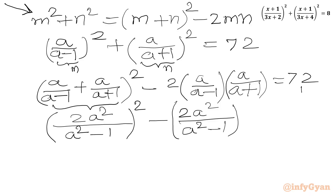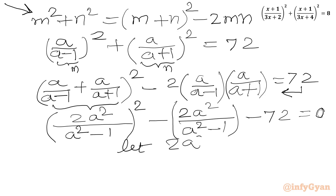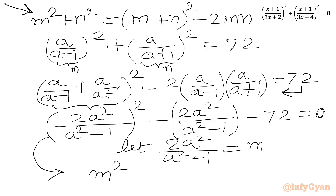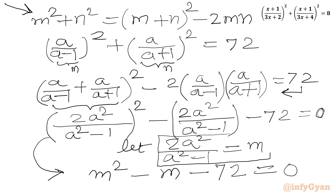If we take 72 to the LHS we write minus 72 equal to 0. Now this is a quadratic equation in 2a squared over (a squared minus 1). Let us say 2a squared over (a squared minus 1) equals m. So we write our quadratic equation in m: m squared minus m minus 72 equal to 0. Remember our substitution: m is 2a squared over (a squared minus 1).